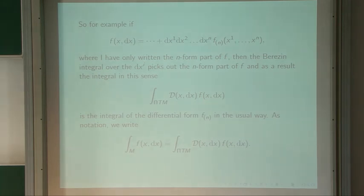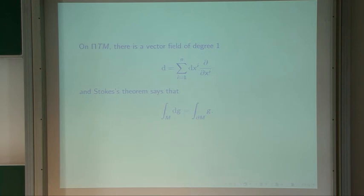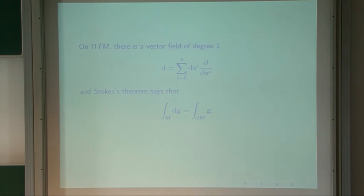There's also Stokes' theorem. On pi(TM) there's a vector field of degree one: the exterior derivative, which is the sum of dx times d/dx, is a vector field on pi(TM) since the dx's are odd coordinates on the fibers. So d is just a vector field; if g is a function, dg is also a function. Stokes' theorem says the integral over M of dg is the integral over the boundary of M of g — I'm just quoting the bosonic Stokes' theorem expressed in different language.